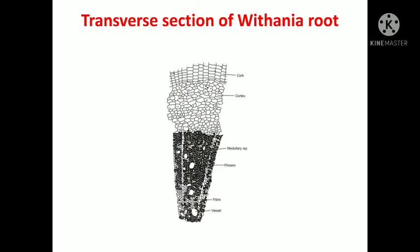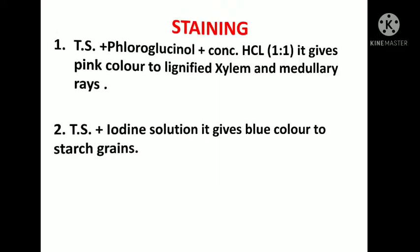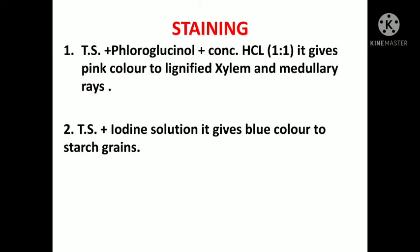It shows medullary rays in the xylem. When we observe the diagram of the TS of Withania root, it shows the upper cork layer, then cortex layer, then parenchyma, then xylem and phloem, and in between the xylem and phloem it shows the medullary rays.